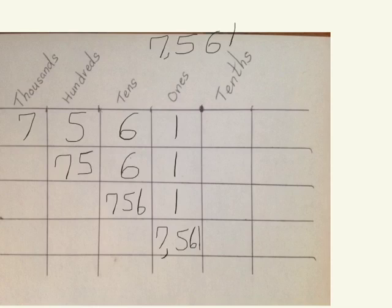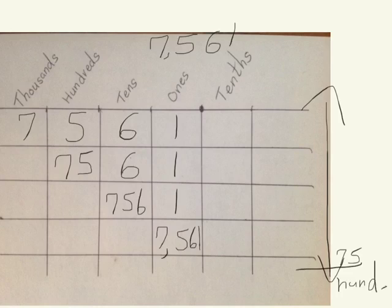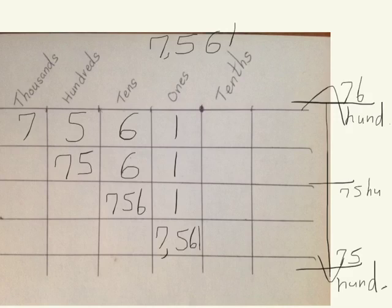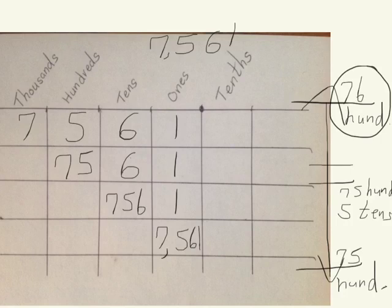When we want to round this number to the nearest hundred, we draw a vertical number line. We see that this number has 7,500 in it. The next hundred up would be 7,600. We need to decide: is this number closer to 7,500 or 7,600? Halfway between would be 7,550. Our number 7,561 is above that midpoint, so it rounds up to 7,600, which in standard form is seven thousand six hundred.